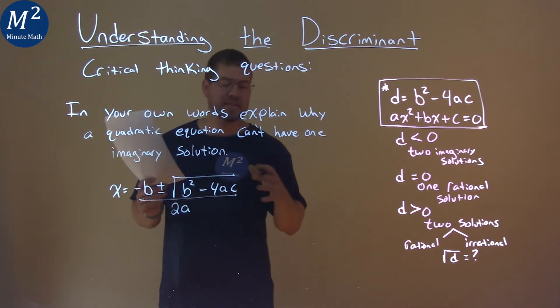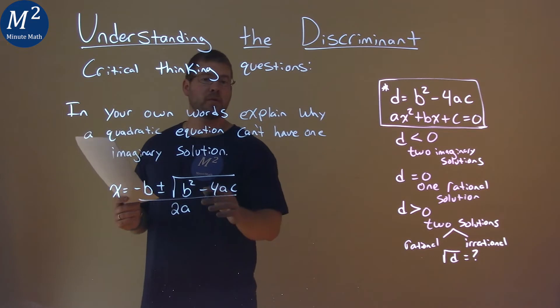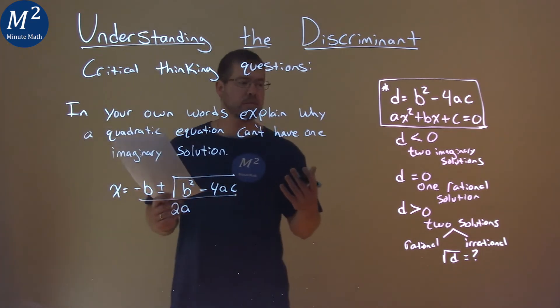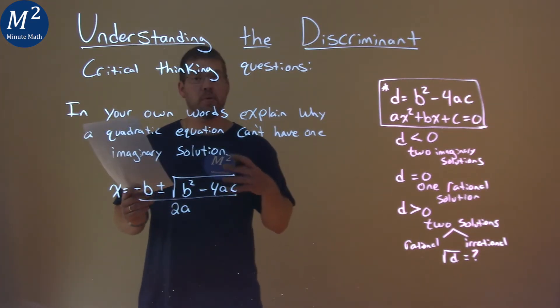They tell us here that if it's equal to zero inside the square root we have one rational solution, but if it's less than zero we have two imaginary solutions.